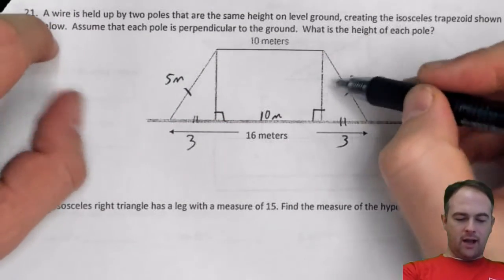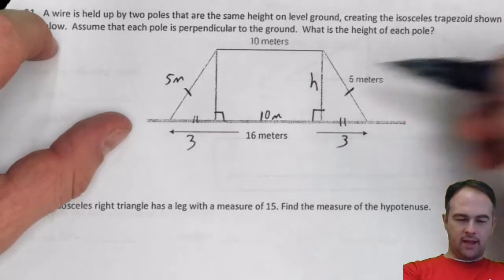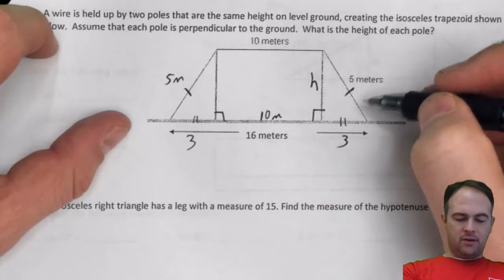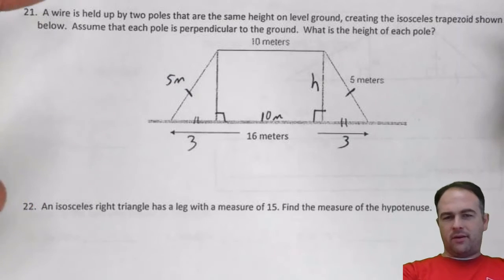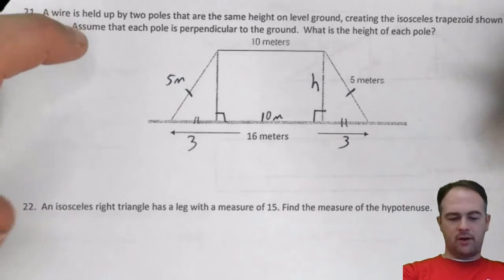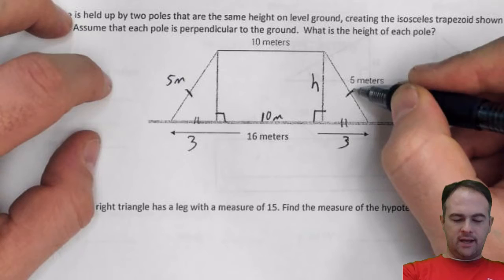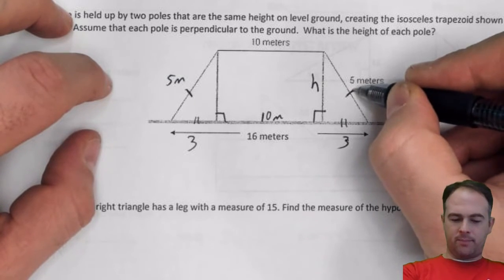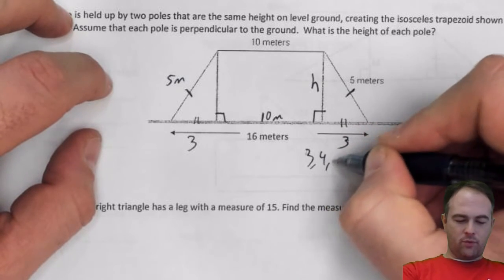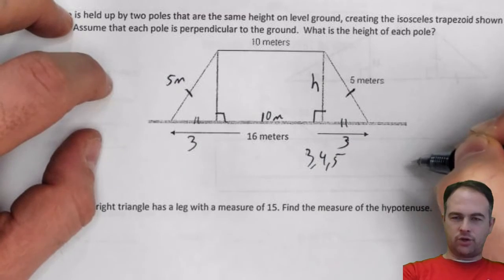Now I want to know the height of the pole, I'm going to make that the h here. And you know what, I'm not even going to do Pythagorean theorem on this one. This is a Pythagorean triple. We've got 3 as a leg, 5 as a hypotenuse, that is a 3, 4, 5 Pythagorean triple.